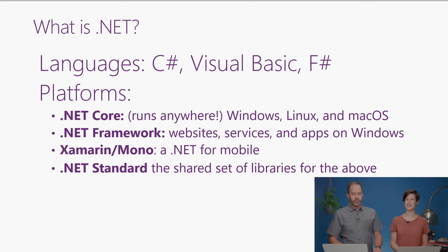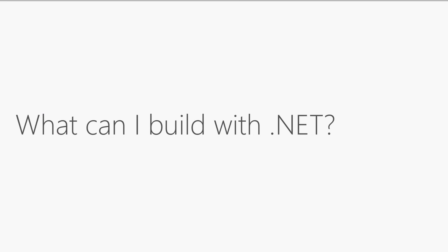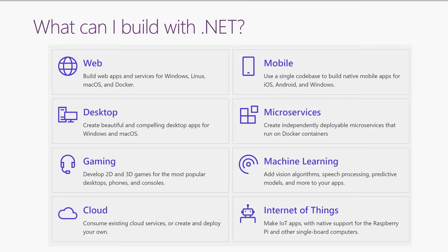Speaking of running anywhere, what exactly can I build with .NET? It turns out quite a lot. We have desktop, microservices, web, mobile, all of that. I like IoT — I like being able to write .NET on a Raspberry Pi, or even on the Windows desktop. So I can write a Windows desktop app and then suddenly go to a tiny device and I'm using the same skills and the same libraries, which is really cool.